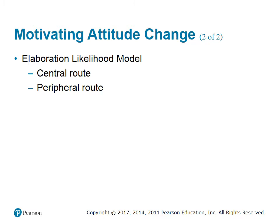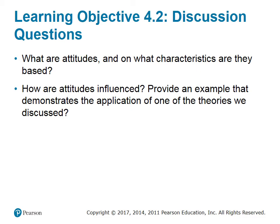The elaboration likelihood model posits that there are essentially two ways people are persuaded: one, when we are interested and focused enough on a message to take a direct central route to decision making; and two, when we are not particularly engaged on a message, we take a peripheral route. Discussion questions: what are attitudes and on what characteristics are they based? How are attitudes influenced? Provide an example demonstrating the application of one of the theories discussed.